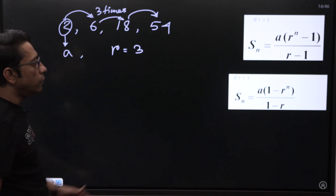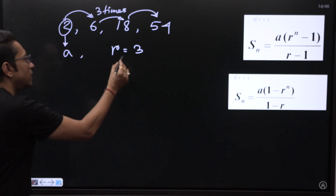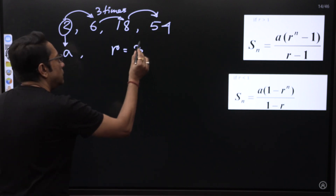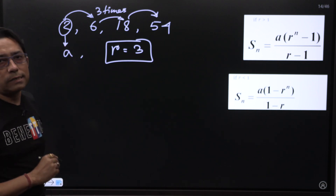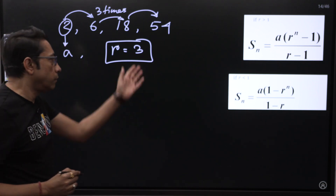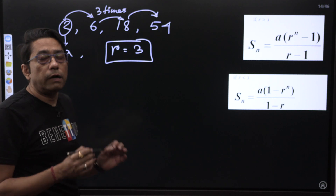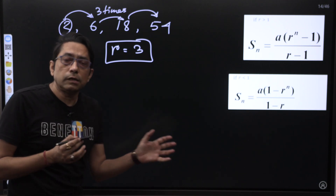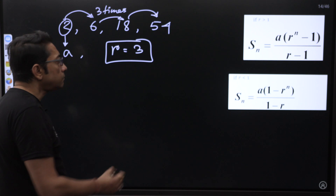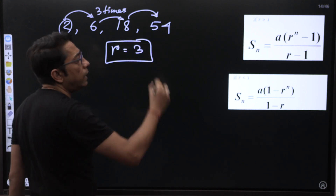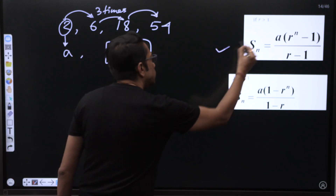Now think: R equals 3 — is it greater than 1 or less than 1? It is obviously greater than 1. R could have been less than 1 as well, like one-half or one-fourth. Since this value is greater than 1, we will apply the corresponding formula.